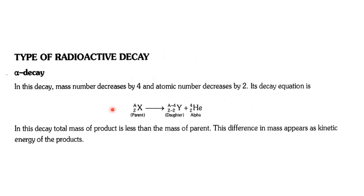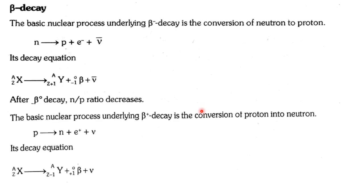In alpha decay, an unstable parent nucleus X undergoes alpha emission, and the daughter nucleus has a reduction in mass number by 4 and atomic number by 2. That means an alpha particle is released during this process.